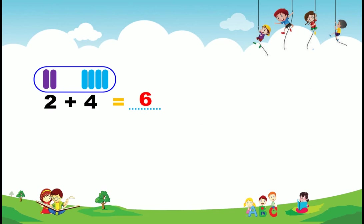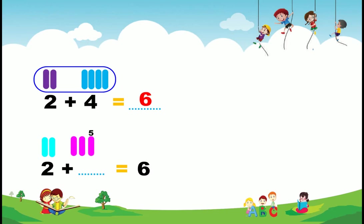In the same manner, we count: 2 plus which number equals 6? How do we find it? First we count 2 sticks, then we count 3, 4, 5, 6. So how many sticks did we count after 2? Only 4. So 2 plus 4 equals 6.